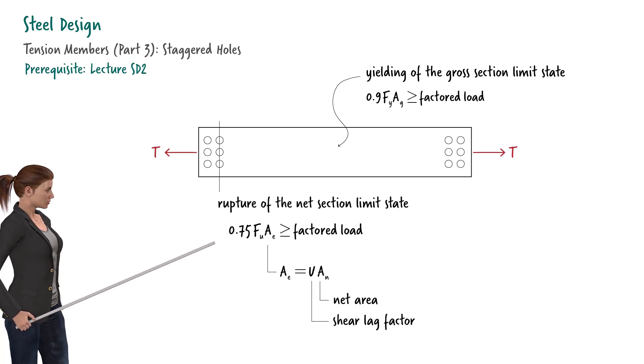Note that the rupture strength is a function of the net area of the member's cross section. For tension members that use bolted connections, the determination of the net area could become rather involved. That is particularly true when the bolt holes are staggered, as shown here.